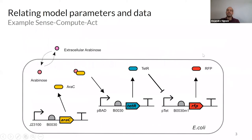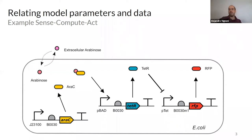This is the circuit we have — the sense-compute-act with arabinose and RFP. We want to make an experiment, measure a constant with this device, and compare it with the information and simulation we got from the model.